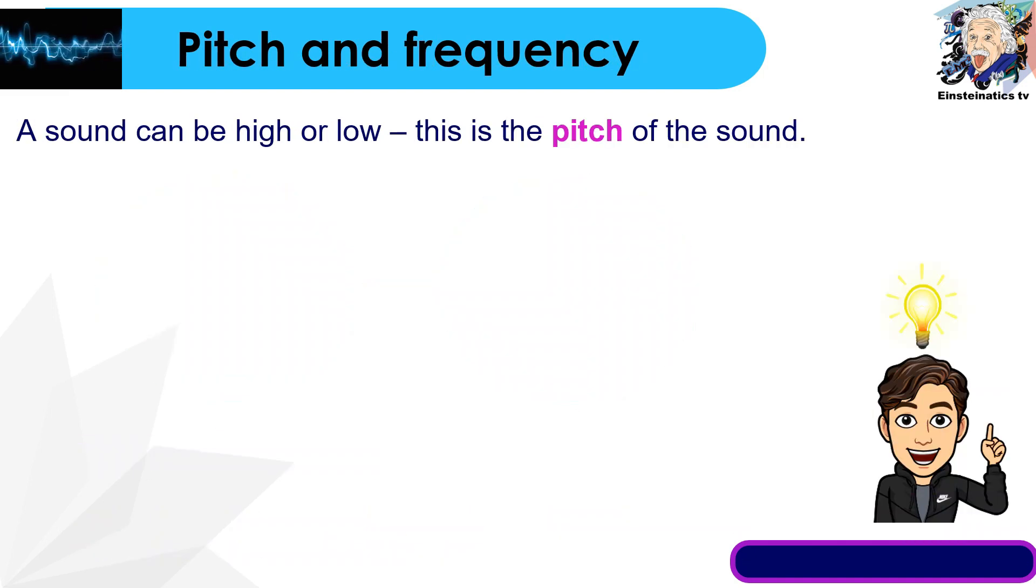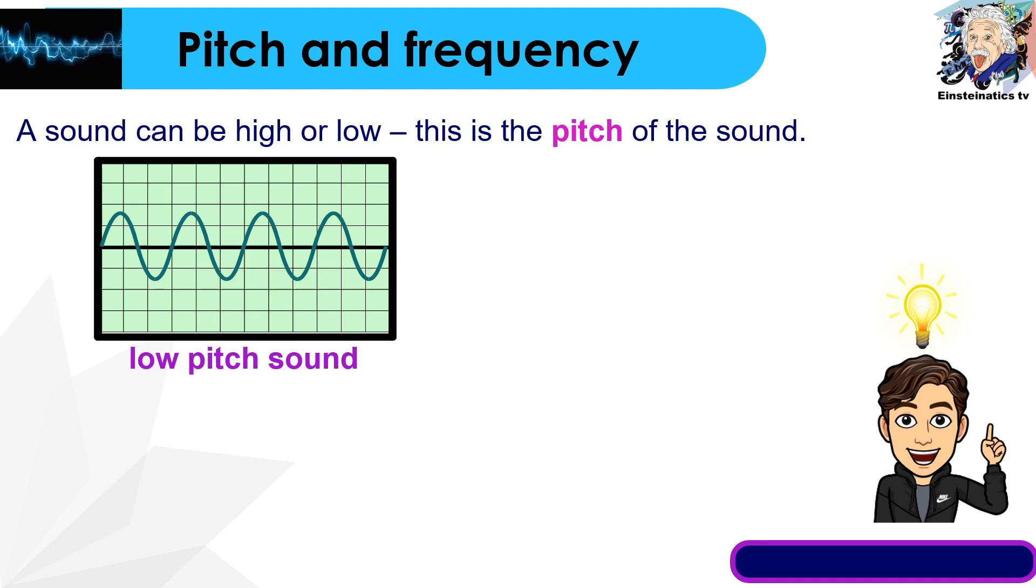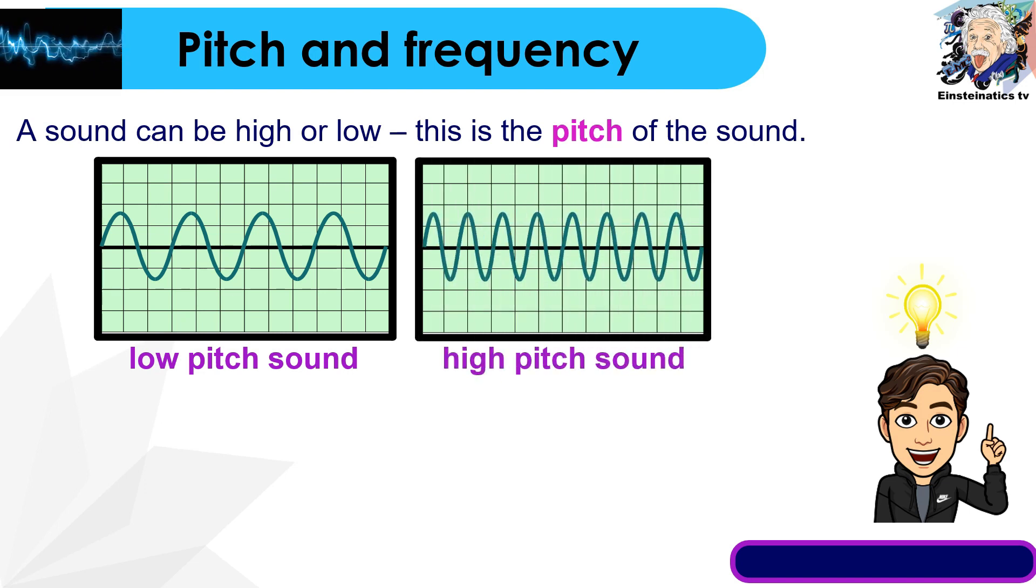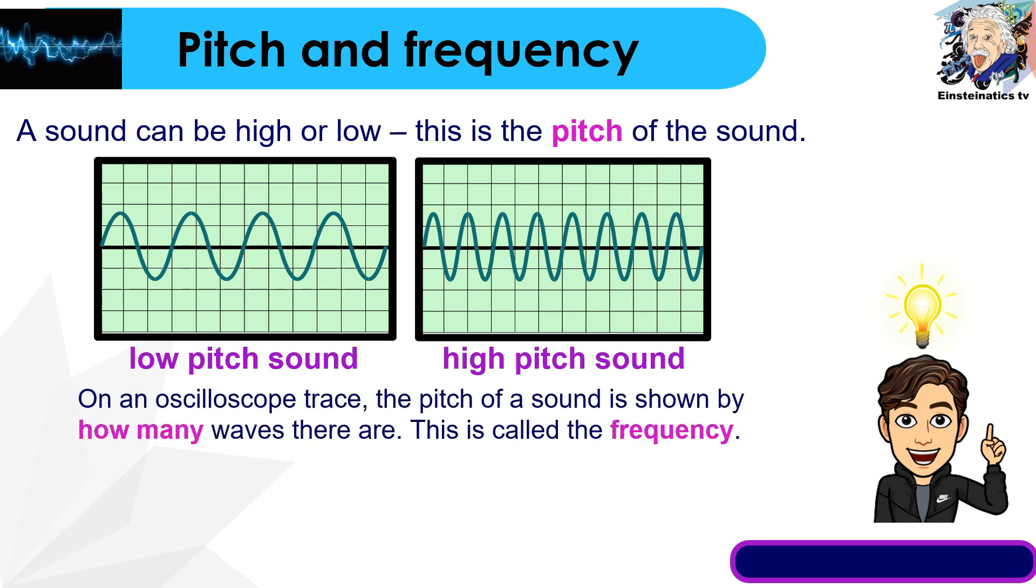Aside from measuring the loudness of a sound using the wave produced by the oscilloscope, we can also determine the pitch and the frequency of a sound. Sound can be high or low, or this is what you call the pitch of the sound. Low pitch sound looks like this one, and high pitch sound looks like this one. If we look at how many waves there are, how many waves pass through one point, this is what we call frequency.